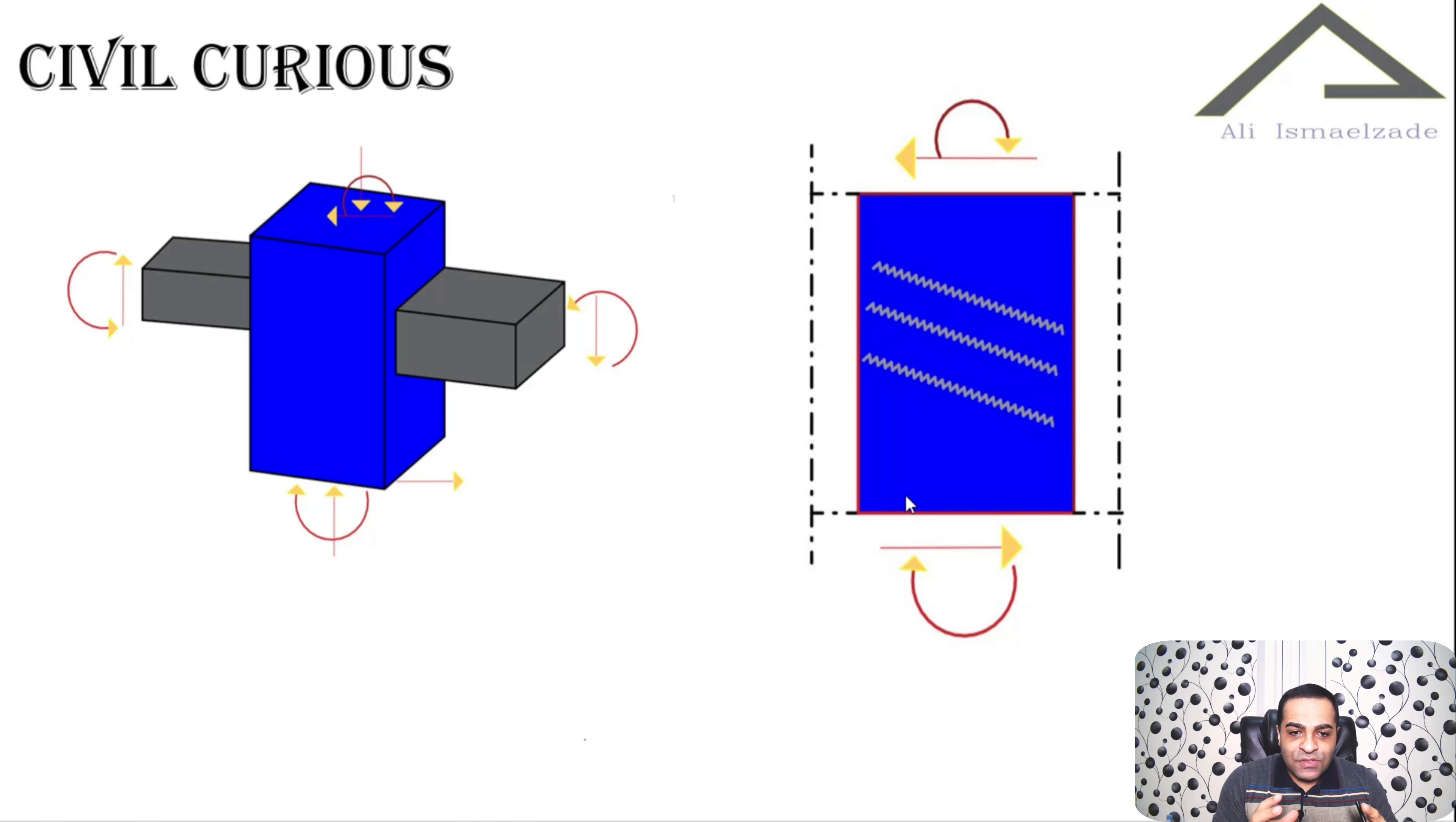You see, these are the forces. We call these shear forces, and we call this moment. Because of these forces, we have distortion in the beam column joint.